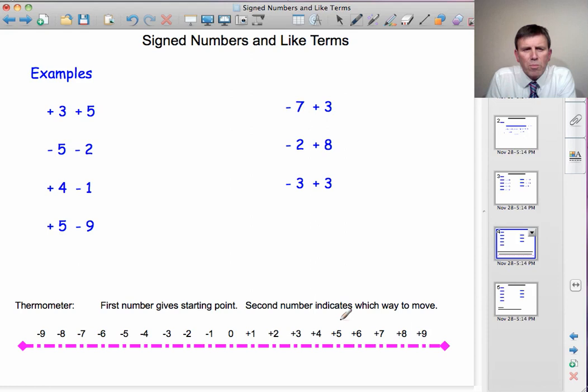So, if I say plus 3 plus 5, then we start at plus 3, and we move along plus 5 in the positive direction. 1, 2, 3, 4, 5, and we've ended up at plus 8. So, plus 3 plus 5 is plus 8.